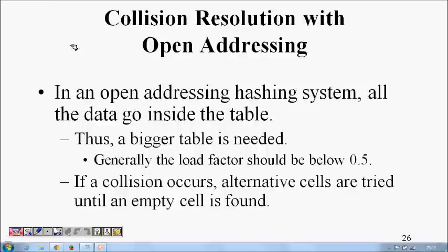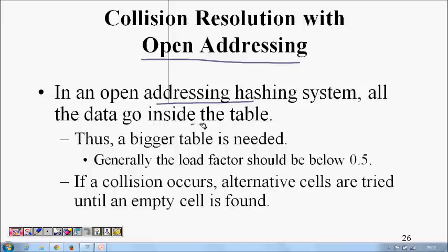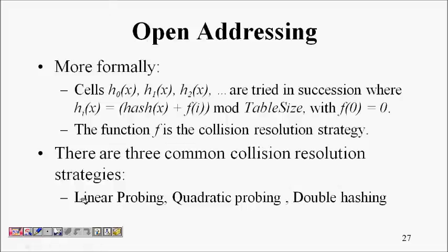In this lecture we will learn about some collision resolution strategies in hash tables, and in particular we will look at the open addressing scheme. In open addressing, all the data goes inside the table itself. This is different from separate chaining or open hashing, where we maintained a linked list for each memory index. Open addressing doesn't utilize anything extra beyond the hash table memory itself, but it requires a bigger table and works when the load factor is below 0.5.